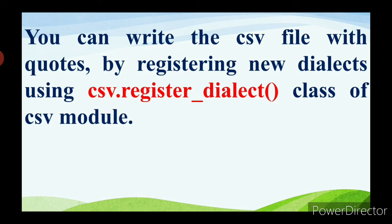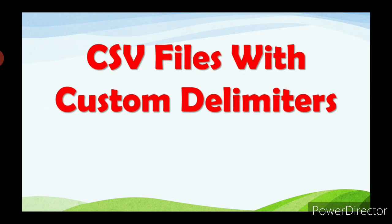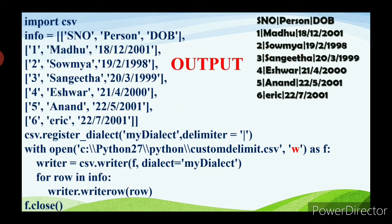The next one is CSV files with custom delimiters. A delimiter is a string used to separate fields; the default value is comma. You can have a custom delimiter in CSV files by registering using csv.register_dialect. Inside the dialect method 'my_dialect', you set delimiter equal to the vertical pipeline character. Your values will then be separated by the pipeline.